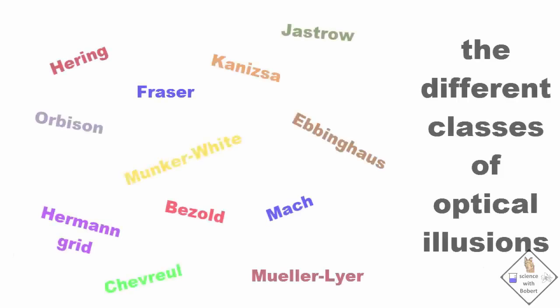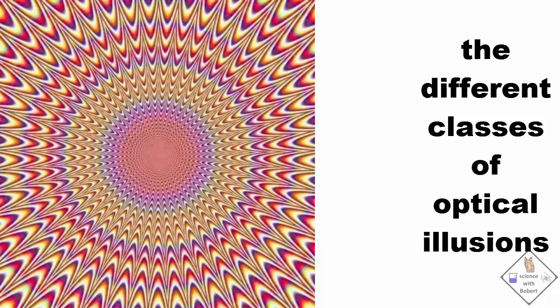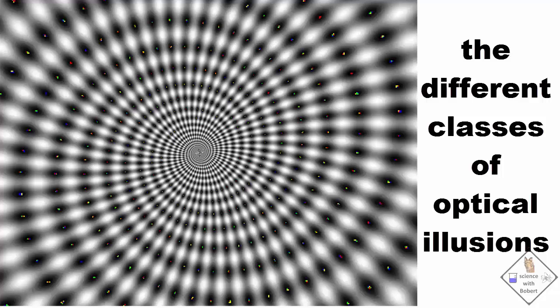Here are some different classifications of optical illusions. When we fixate on a pattern, it momentarily remains on our retinas as an afterimage. Some theorize that small, involuntary eye movements cause this ghost image to overlap with the image we are fixating on, and the result is a vibrating image.